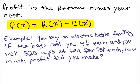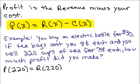So if we take this function, we really just want the profit for selling 220 cups of tea. That would be R(220) minus C(220), which we already computed.